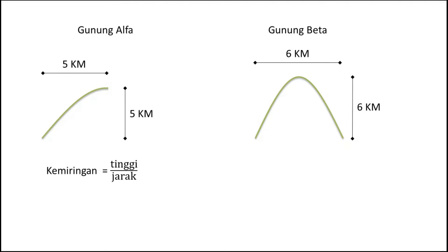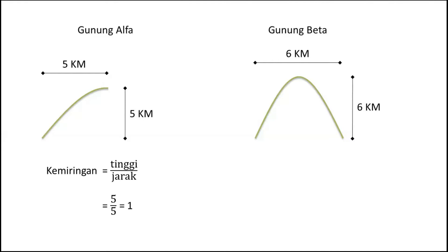Tingginya 5, jaraknya 5, maka kemiringannya adalah satu. Lima per lima sama dengan satu. Itu untuk gunung alfa. Sekarang untuk gunung beta, kira-kira bagaimana cara mencari kemiringan gunung beta? Apa langkah awal yang perlu dilakukan?